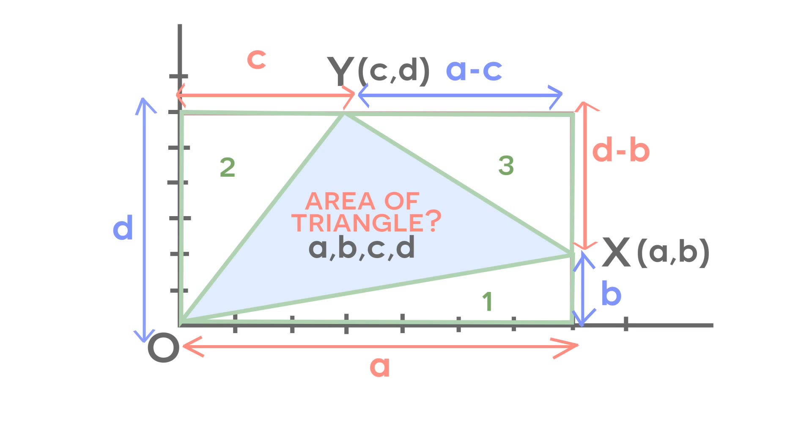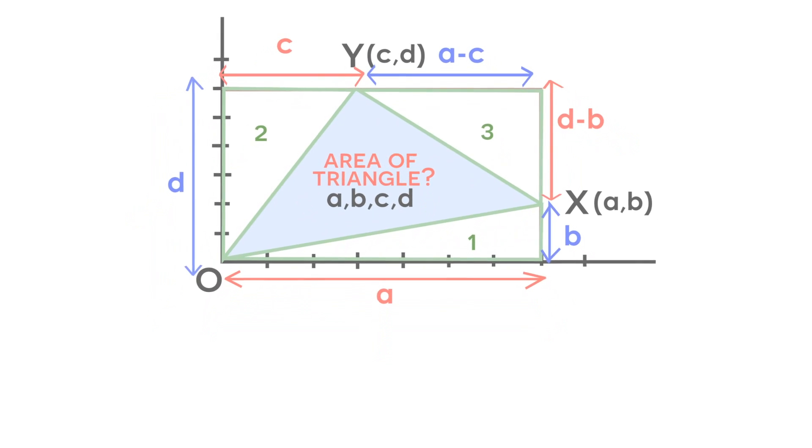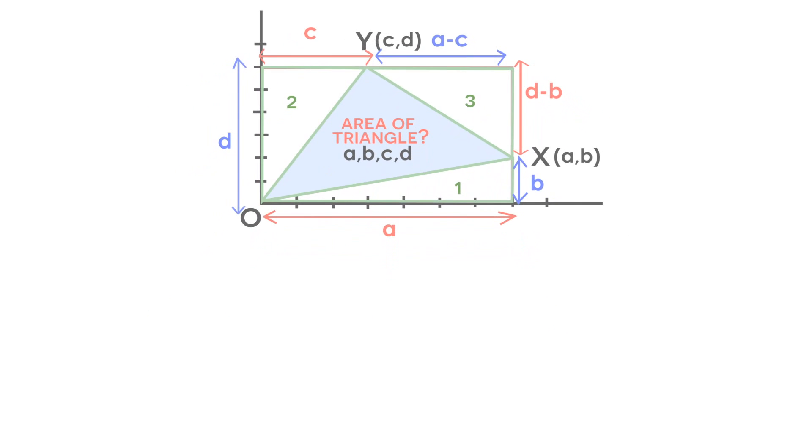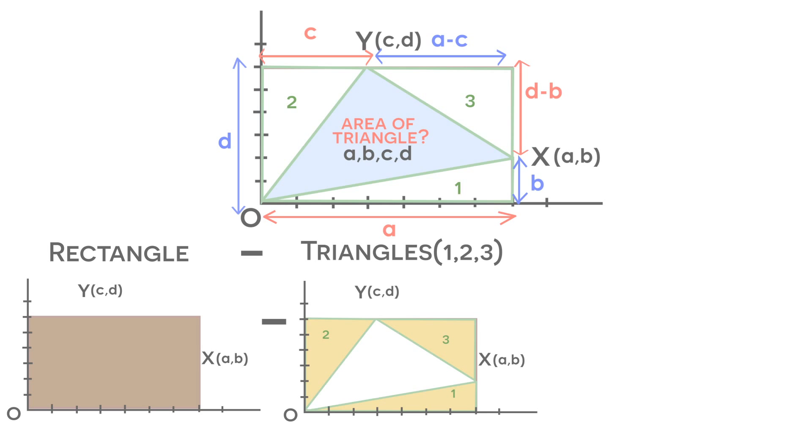So now that we labeled everything, how do we find the area of the shaded triangle? Well, if we take the area of the rectangle and subtract the area of triangles 1, 2, and 3, what we have left over is going to be the area of the shaded triangle, which is what we are solving for.